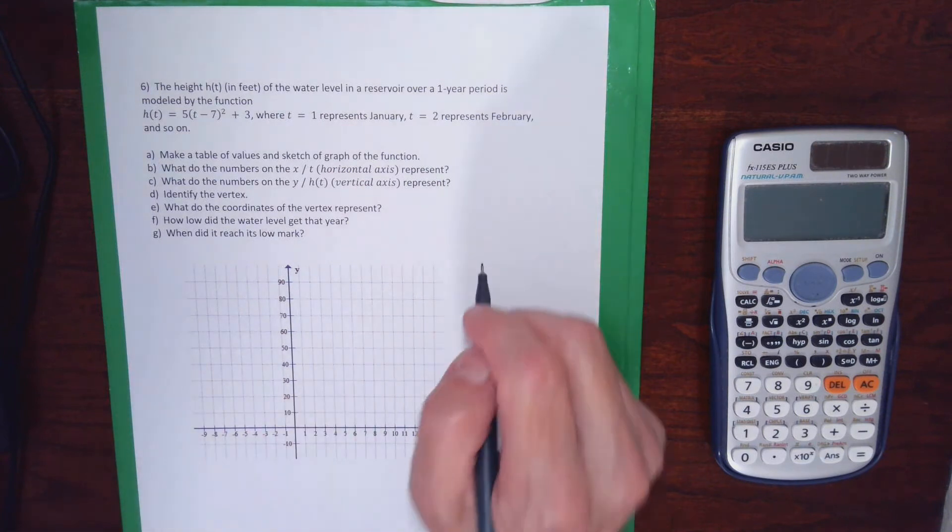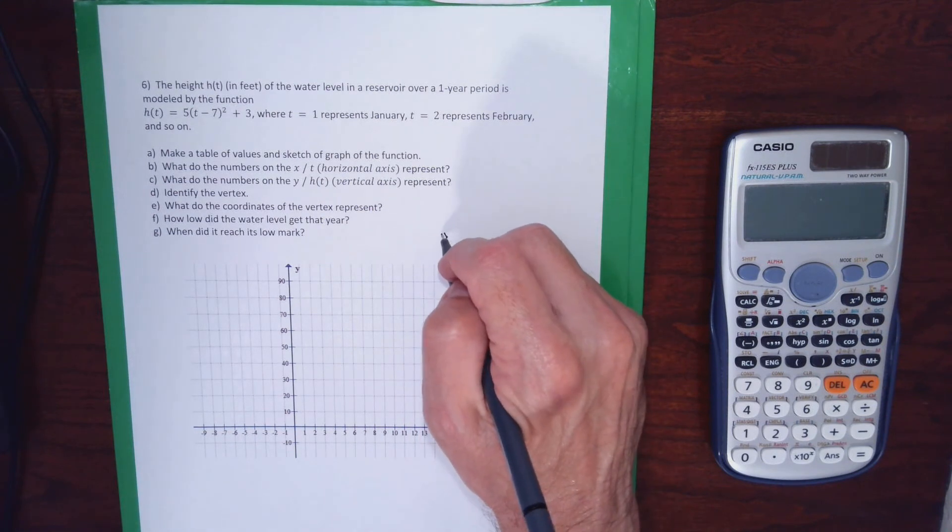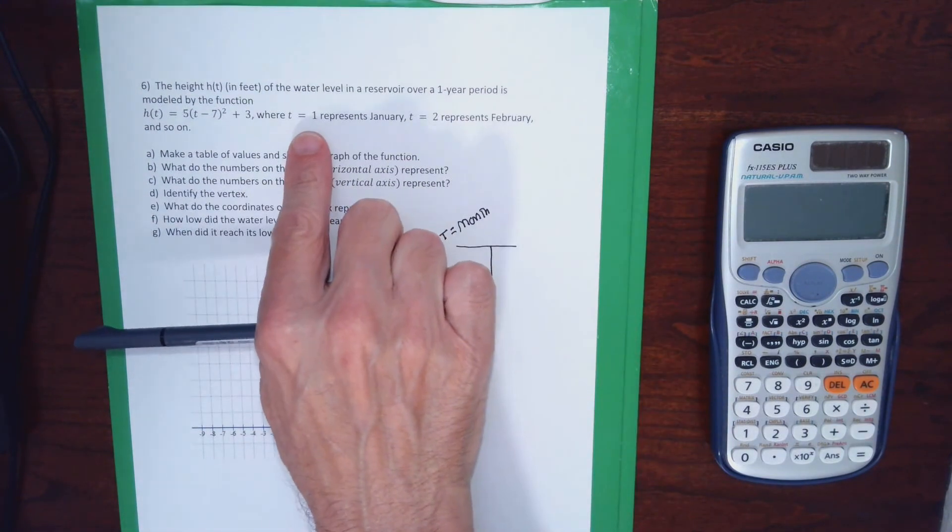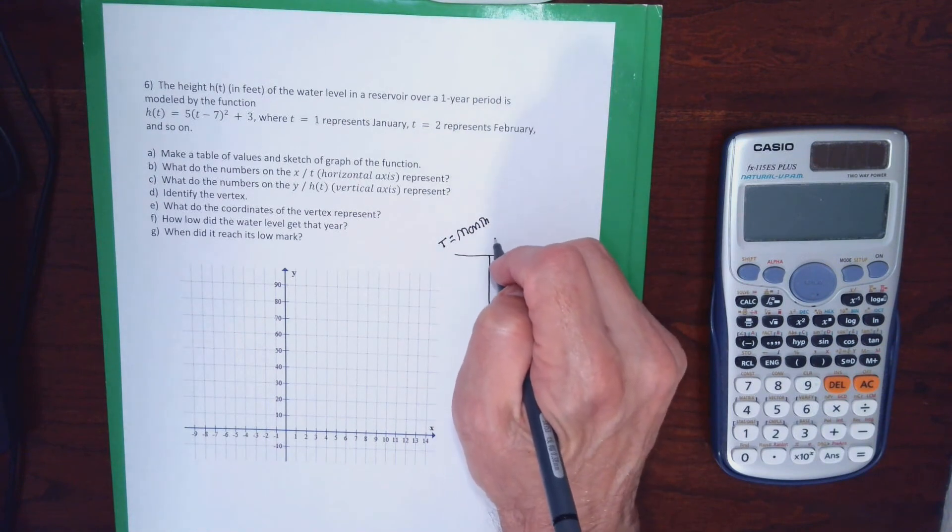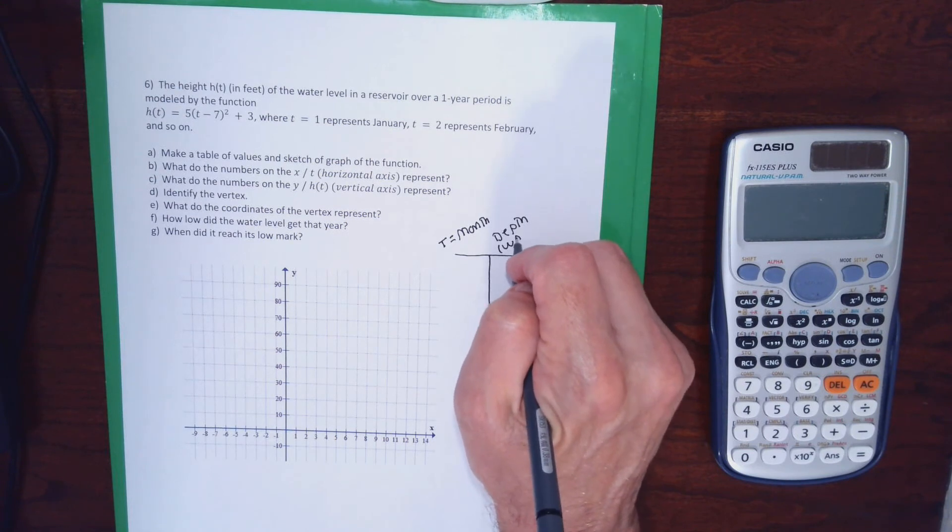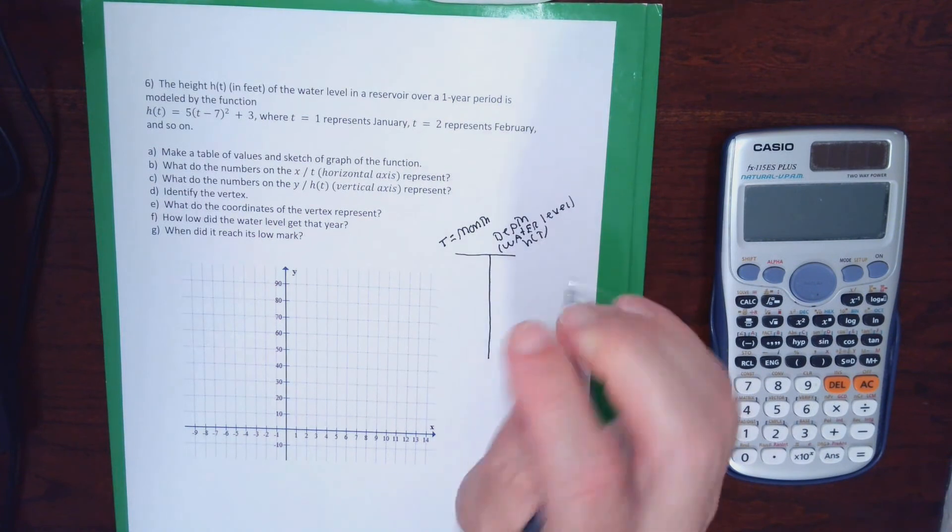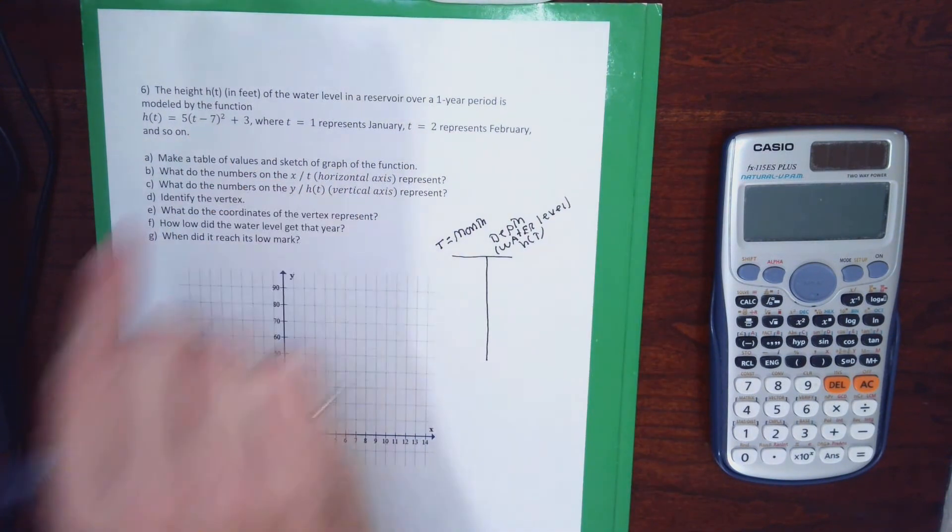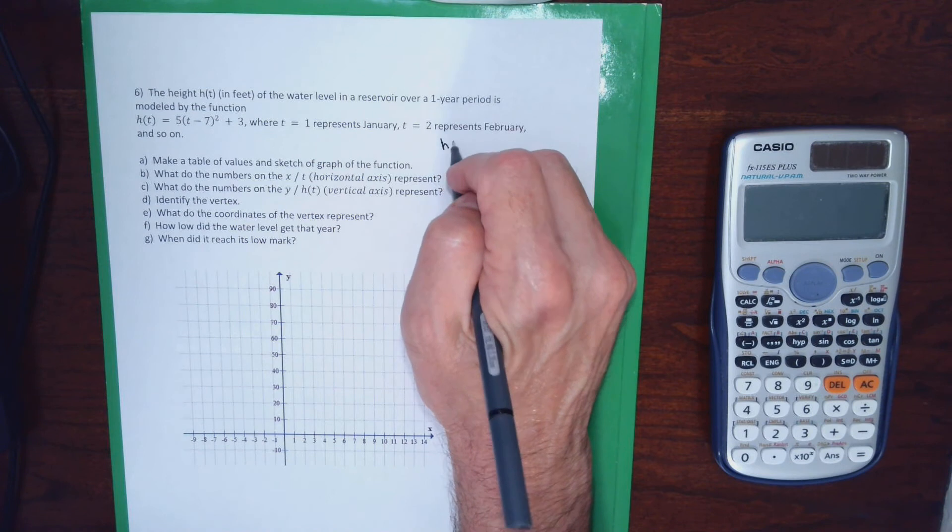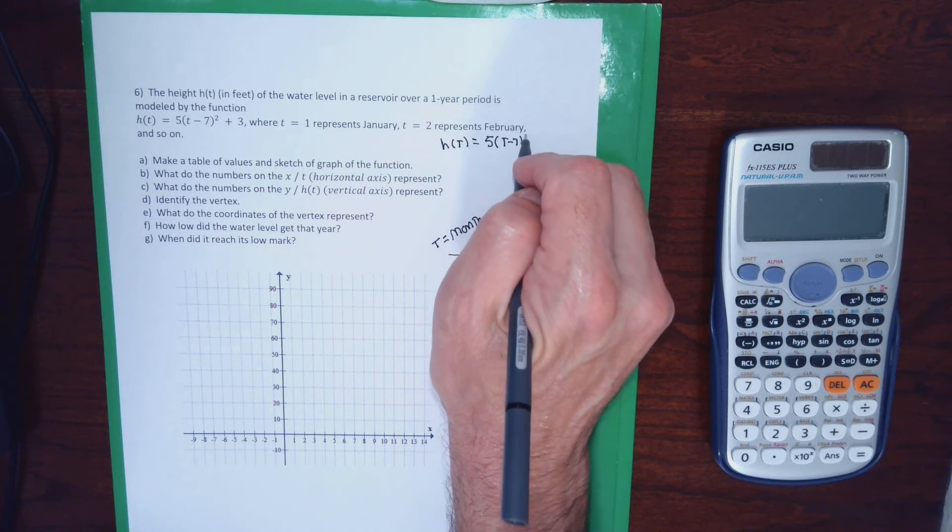So I'm asked to make a table of values and sketch a graph. And real specifically, I'm going to make my columns labeled nicer. The X column, I'm going to write month because the variable T stands for the month of the year. The Y column, I'm going to write depth or something that represents how much water level, how much water is in the reservoir. And that's technically the function name.